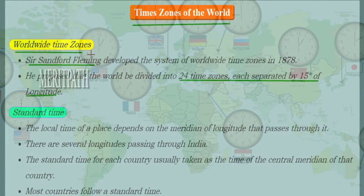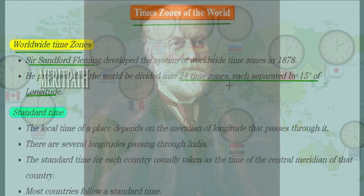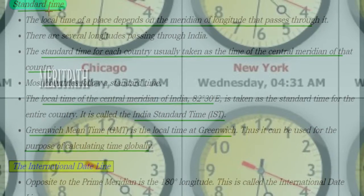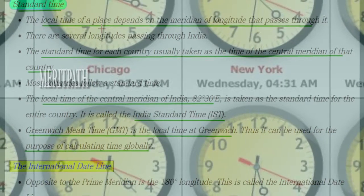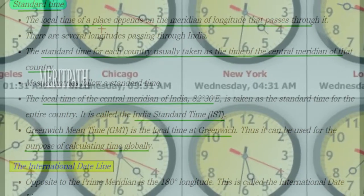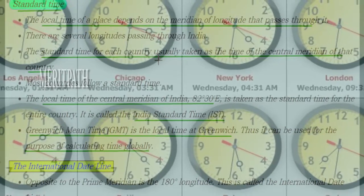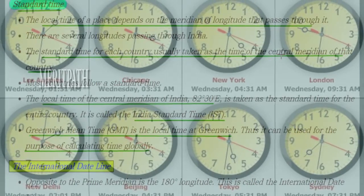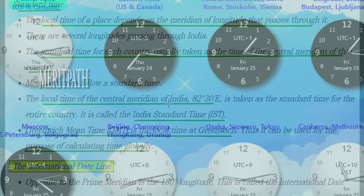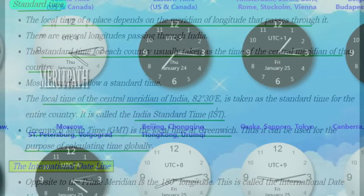There are worldwide time zones. Sir Sandford Fleming first discovered the worldwide time zones in 1878, proposing that the world be divided into 24 time zones, each separated by 15 degrees of longitude. Standard time is the local time of a place that depends on the meridian of longitude passing through it. Each country has a standard time based on its central meridian — for India, this is 82.5 degrees East, known as Indian Standard Time.